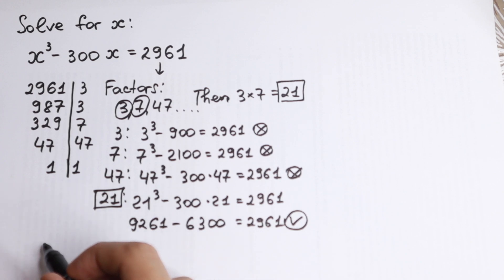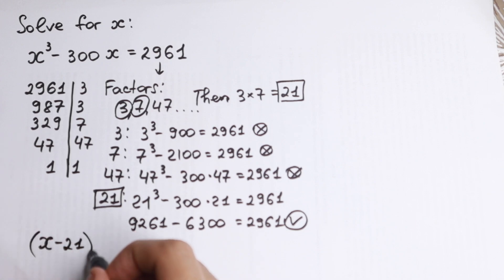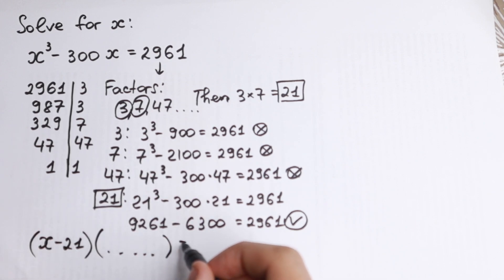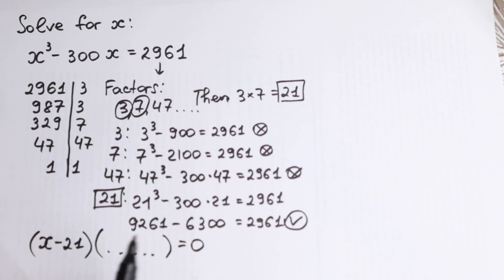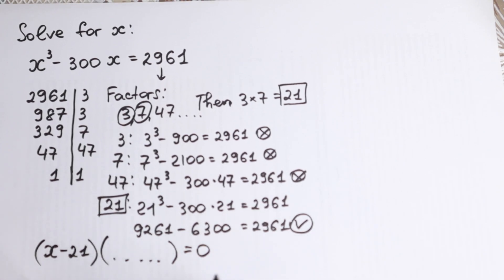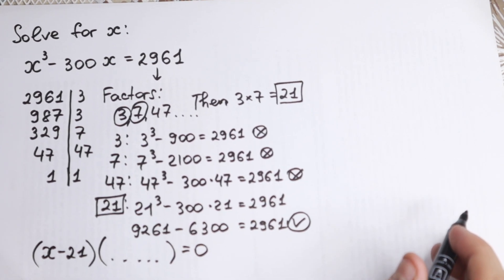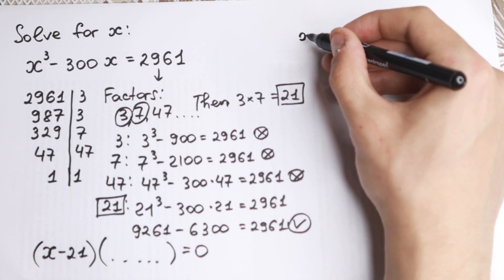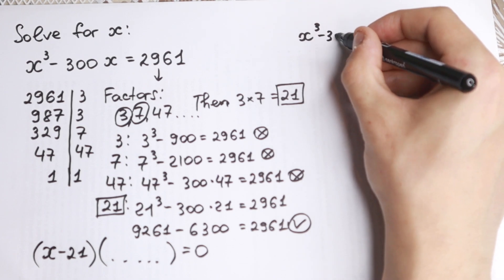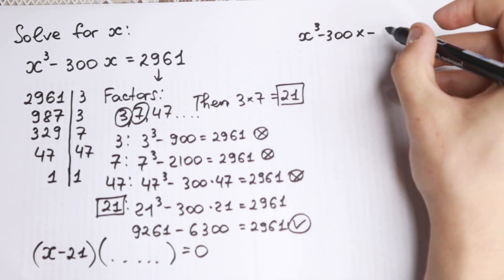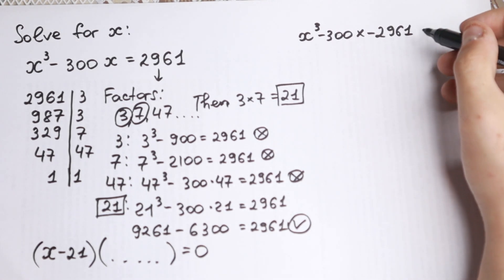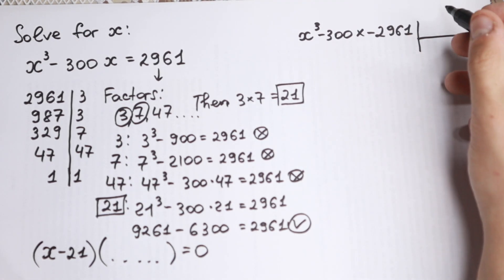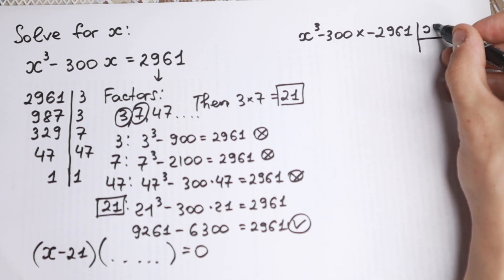Because 21 is a root, we can write the equation as (x minus 21) times a second factor equal to zero. We need to find that second factor by dividing x cubed minus 300x minus 2961 by (x minus 21). There are no tricks here — we need to do the division.